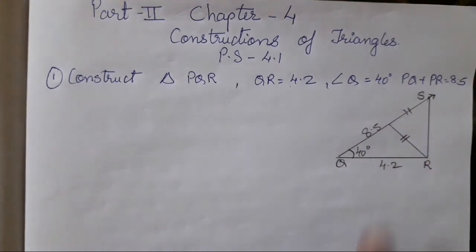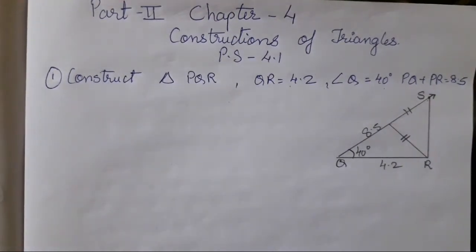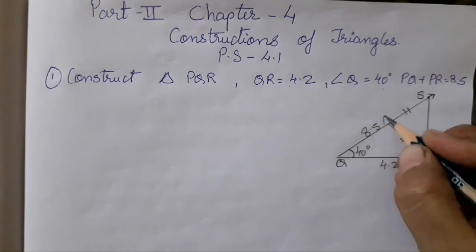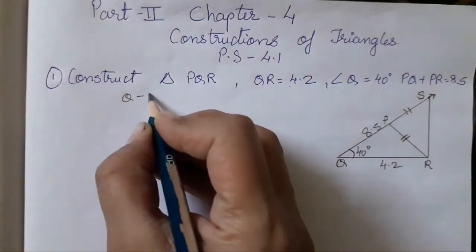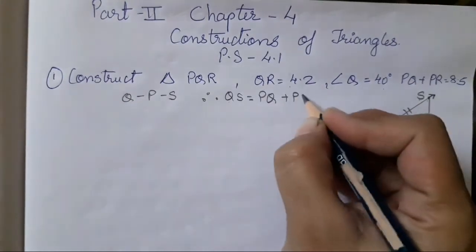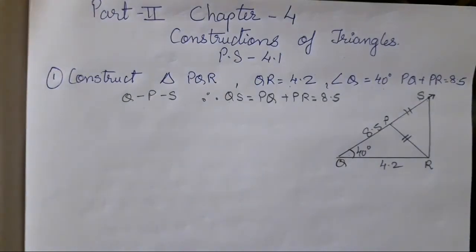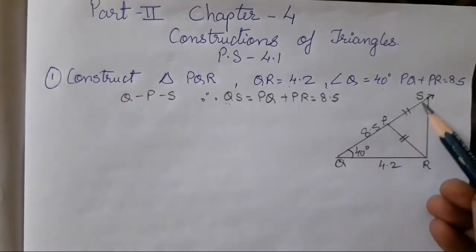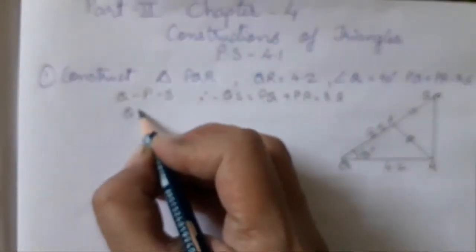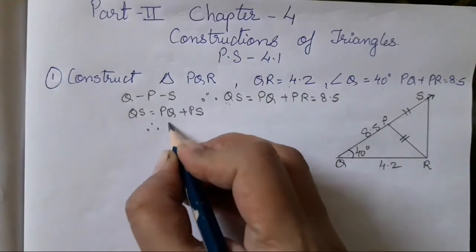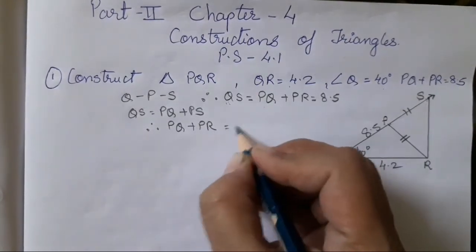I hope everyone has understood how to construct a triangle according to the given question. A few things to remember: the length of QR is 4.2 centimeter. QP and S is such that P is in between. Therefore, from this we get QS is equal to PQ plus PR, which is equal to 8.5 centimeter. So from QS we are getting 8.5 centimeter by adding these two points. Accordingly, QS is equal to PQ plus PR. Therefore, PQ plus PR is equal to QS.